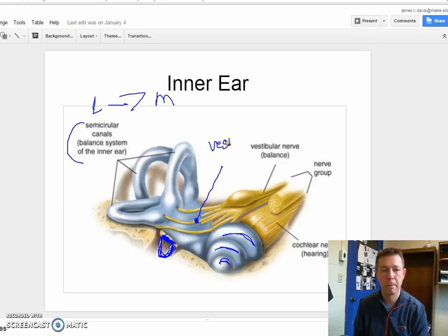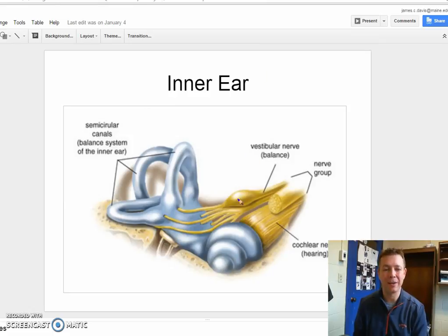Those three pieces together, semicircular canals, the vestibule, and our cochlea are the three things that actually take and make up our inner ear. So it's a network of tubes which are then encased in bone.